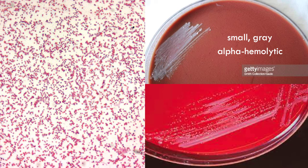When you look at Francisella under the microscope, calling it a coccobacillus is a stretch — it really doesn't look like a bacillus at all. It does have a gram-negative hue. On supplemented agars, colonies are very small, gray, and alpha-hemolytic — seen on chocolate agar or modified Thayer-Martin, and on cysteine-supplemented blood agar.